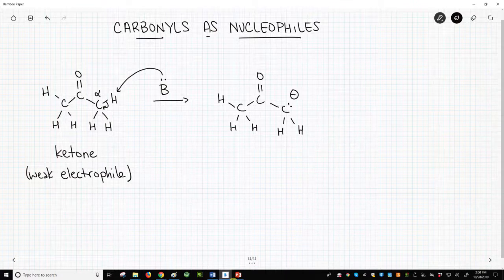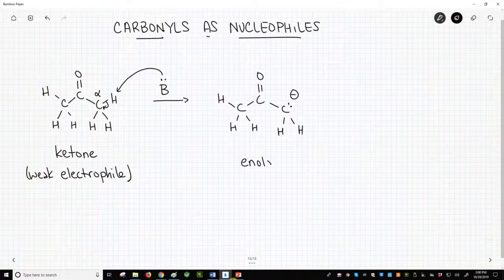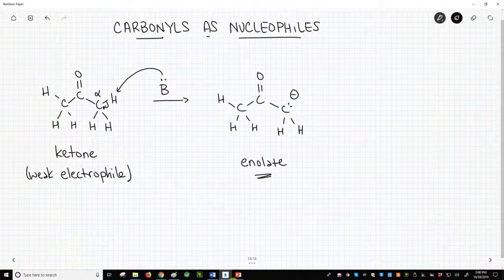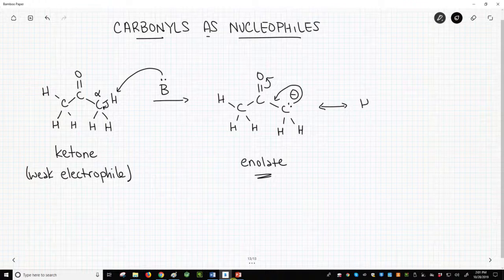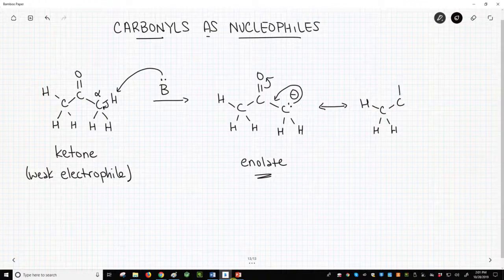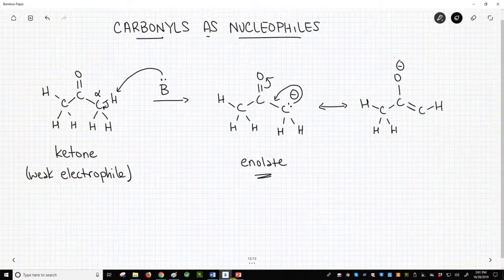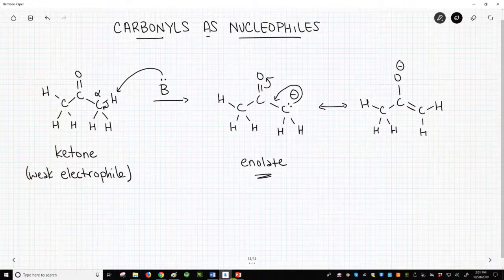This is called an enolate. This anion, unlike most carbanions, is relatively stable because of the resonance we can use with our carbonyl. So we can delocalize this negative charge into the oxygen, which is electronegative and bears the charge better.